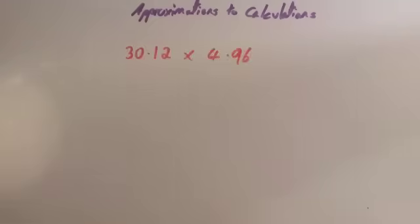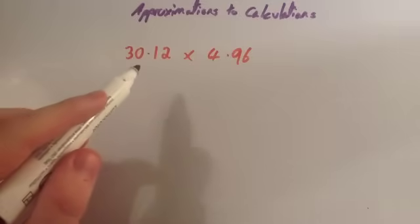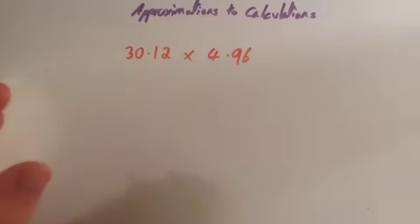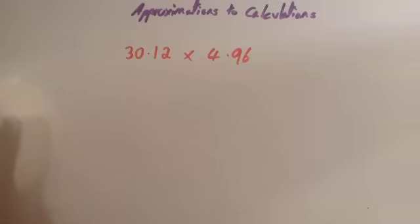Let's look at some examples now. If an exam tells you to estimate or to approximate a calculation, they don't want you to work out exactly. For instance, they wouldn't want you to work out this sum exactly by multiplying these decimal numbers. What they want you to do is to round the numbers to nice, sensible, easy numbers to deal with, and then approximate the calculation.